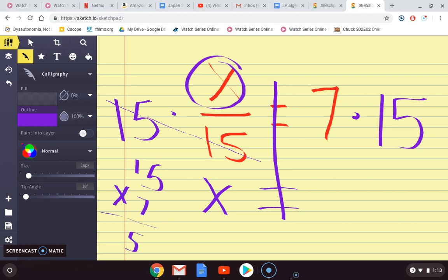7 times 5 is 35. Then 7 times 1 is 7, 8, 9, 10. So it's 105. x is 105.